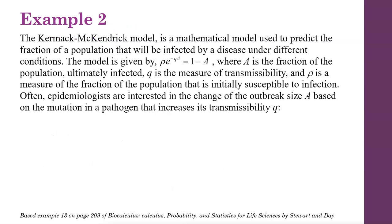Let's look at one more example — a life science application. The Kermack-McKendrick model allows us to predict the fraction of a population that will be infected by a disease under different conditions. The equation is: rho times e to the negative qa equals 1 minus a. Here, a is the fraction of the population ultimately infected, q is the measure of transmissibility of the virus, and rho is the measure of the fraction of the population initially susceptible to infection — for example, those who are not vaccinated. Rho is a constant for this problem.